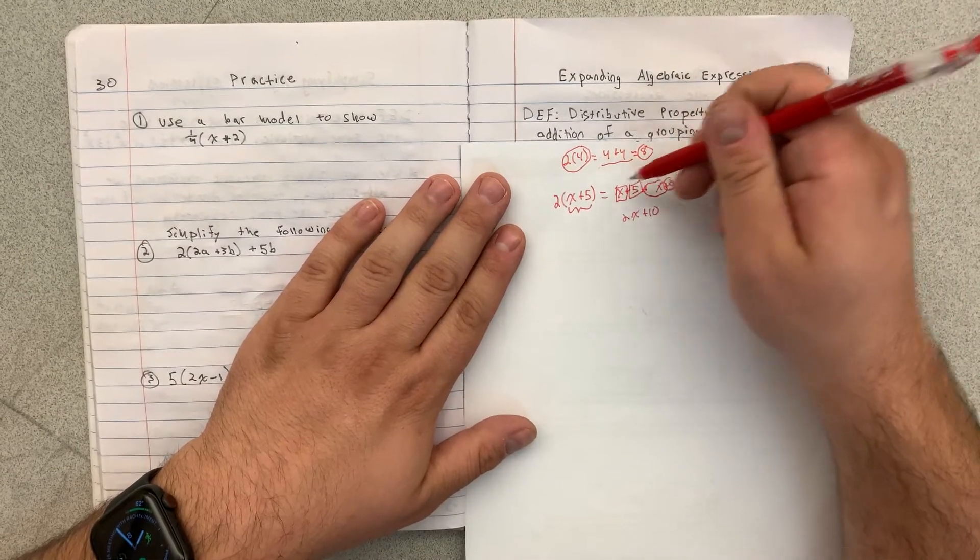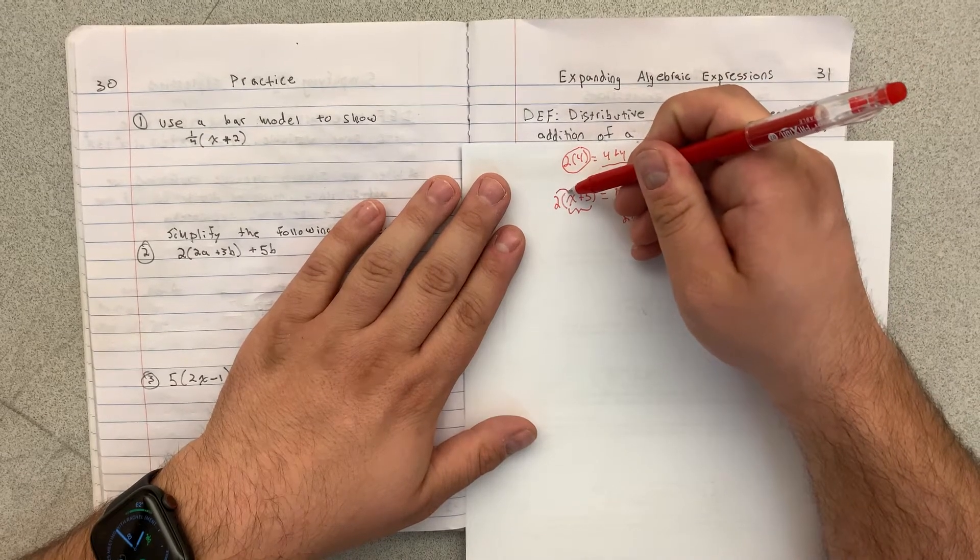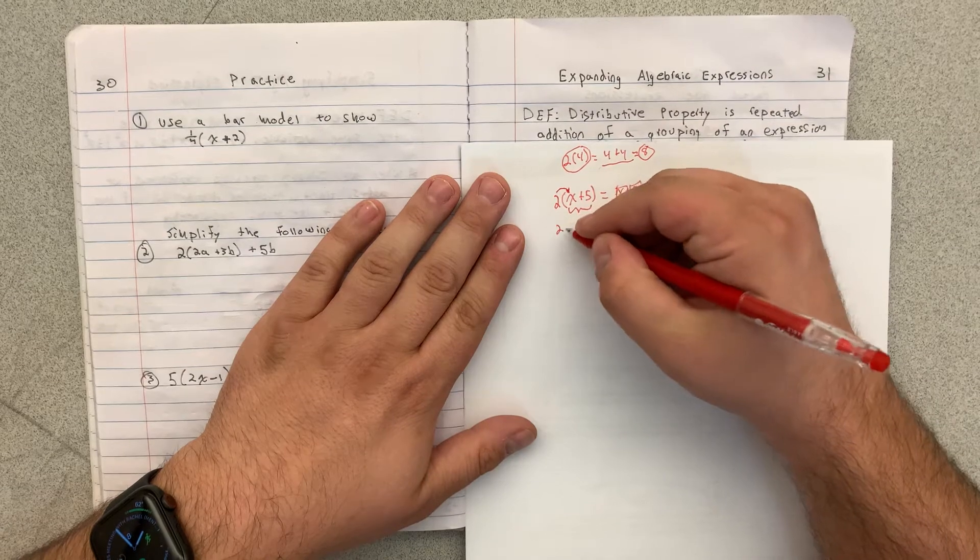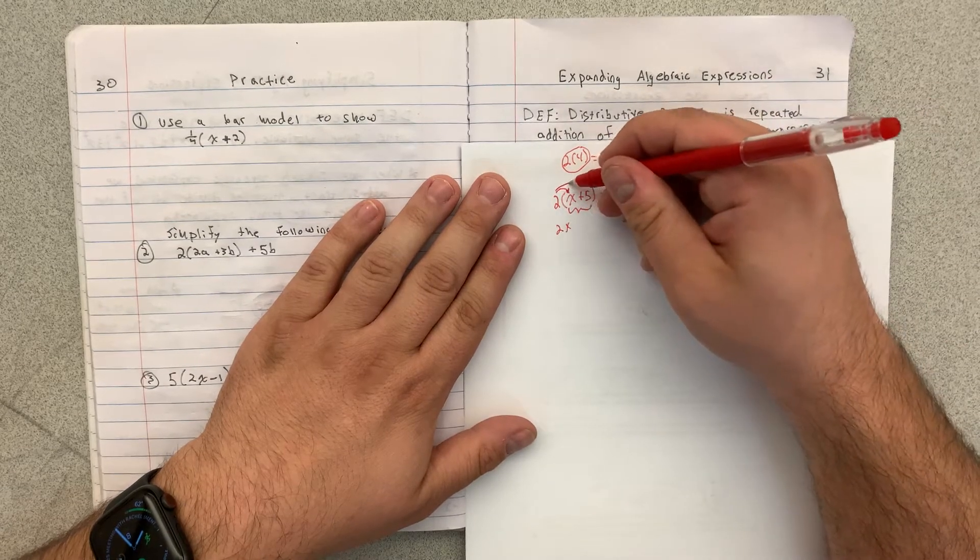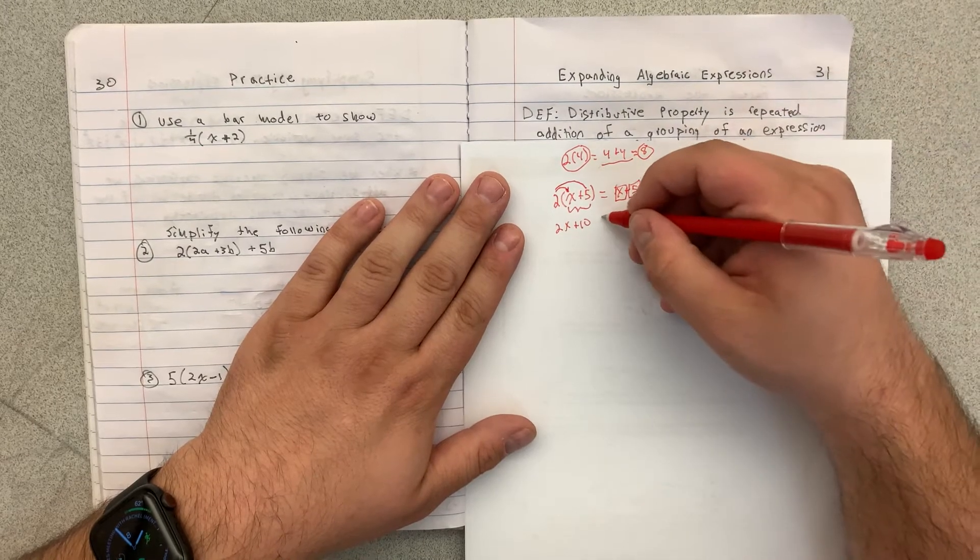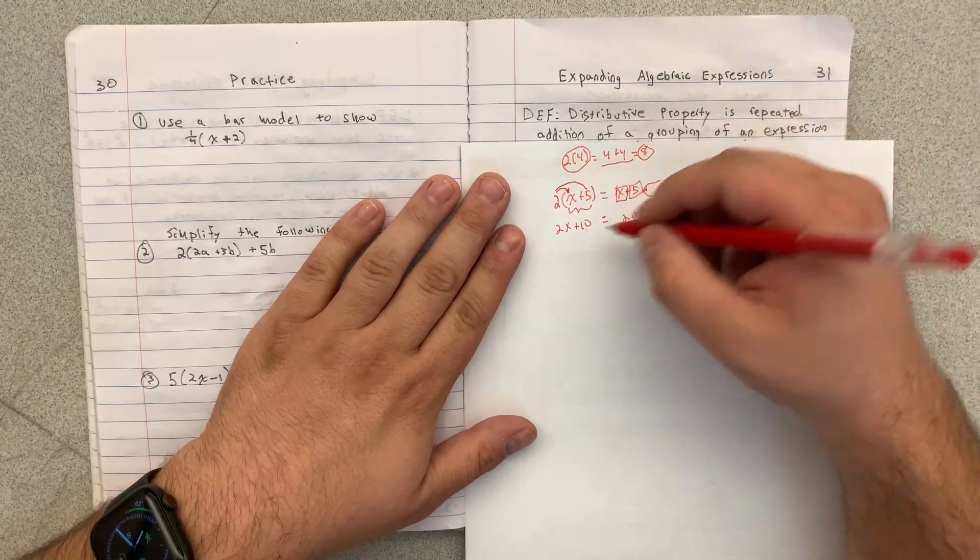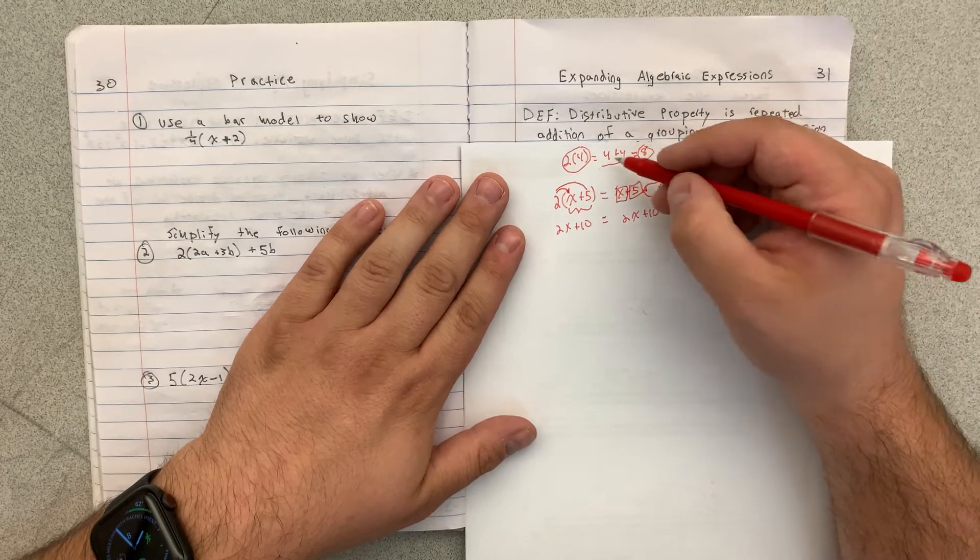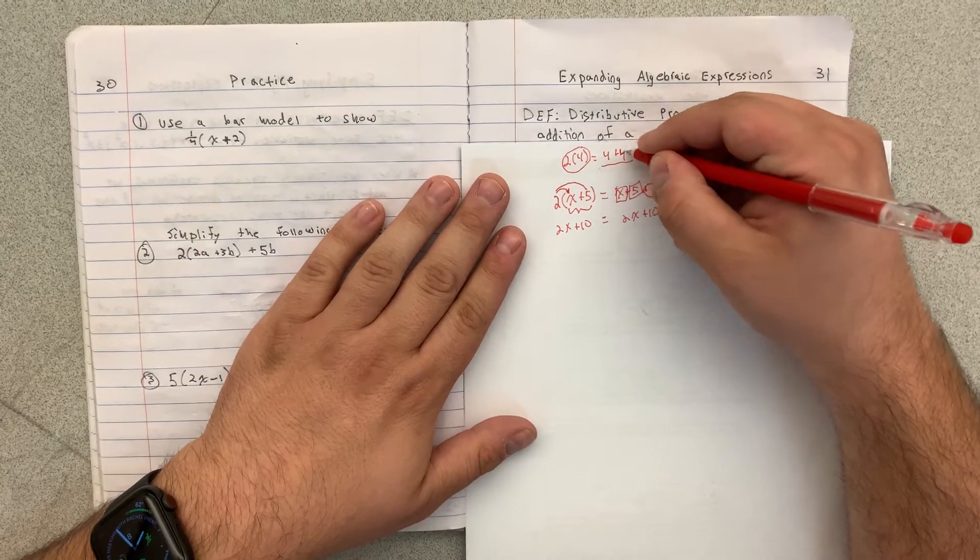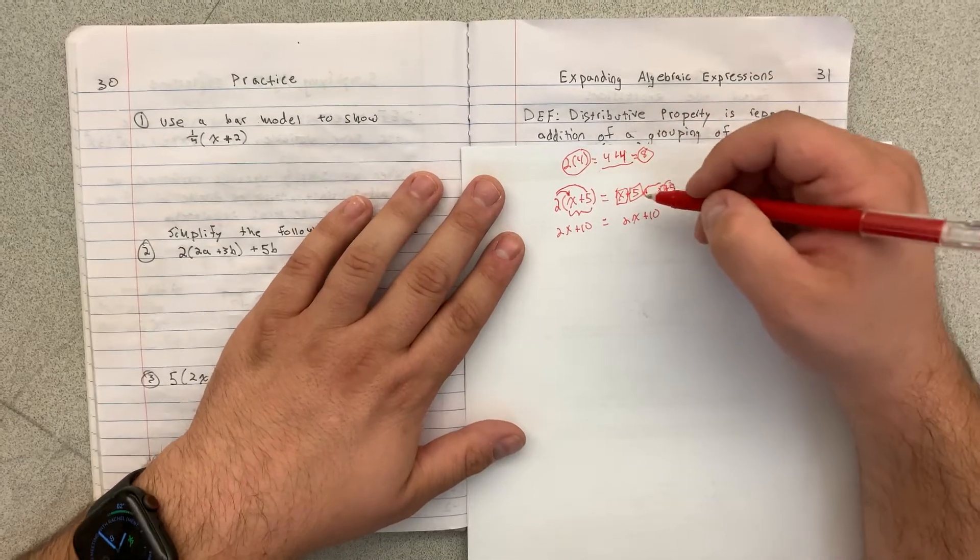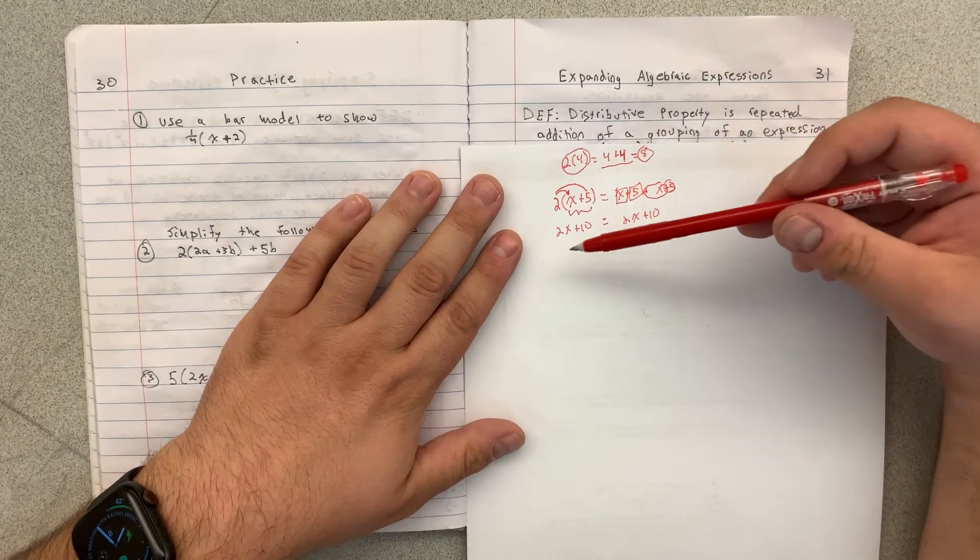Distributive property says that you can skip that step and distribute the 2 using multiplication. So 2 times x is 2x. And 2 times positive 5 is positive 10. So either way, you get to the same answer. But there's no kind of steps that you can do in your head until you've practiced this more. So this might not be the first time you've seen it, but this is why the distributive property works.